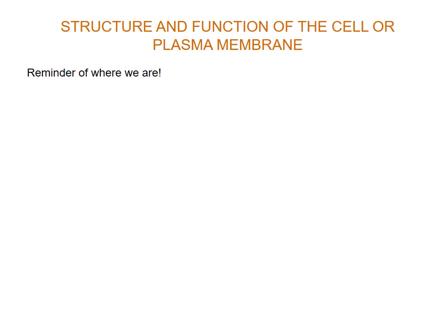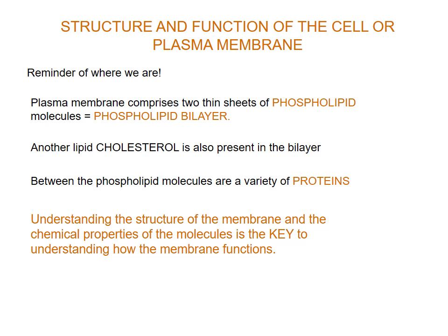To remind ourselves where we are so far: the cell membrane consists of two thin sheets of phospholipid molecules — a phospholipid bilayer. There is another lipid known as cholesterol which is also present, and we know it affects the permeability of the bilayer. Between the phospholipid molecules, we have a variety of proteins. Understanding the overall structure of the membrane and its chemical properties will give us good insight into how the membrane functions.